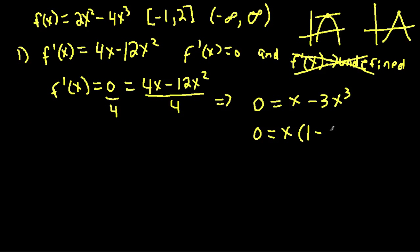1 minus 3x, right? So now we just need, these are two cases, so our first case is when x is equal to 0, and when 1 minus 3x is equal to 0. So we already have one critical number, or we at least think it's a critical number, when x is equal to 0. Solving for x here, we have negative 3x is equal to negative 1, and x is equal to 1 third.